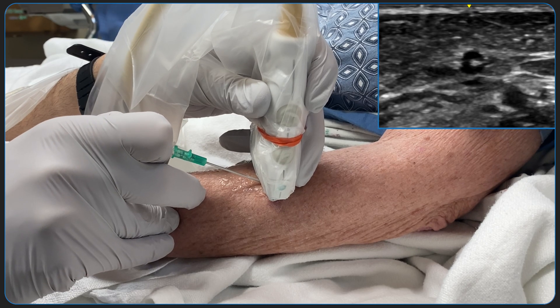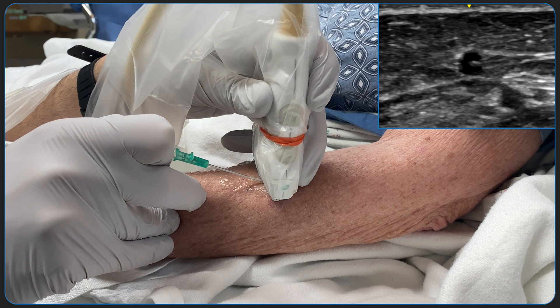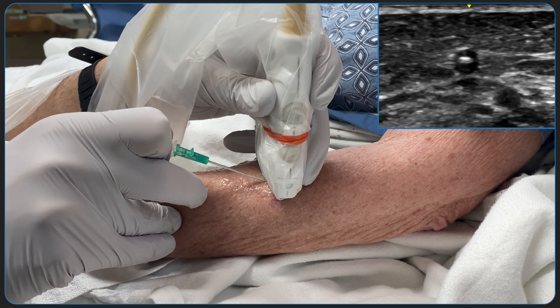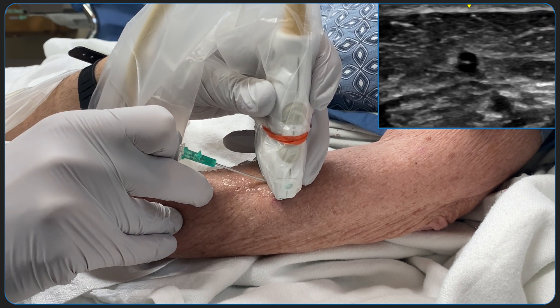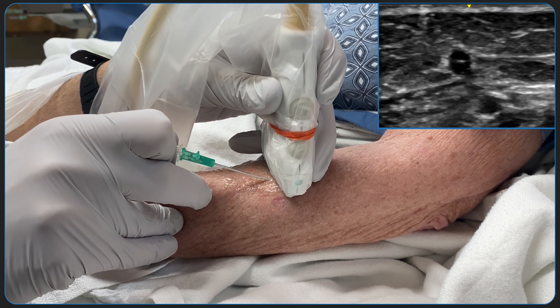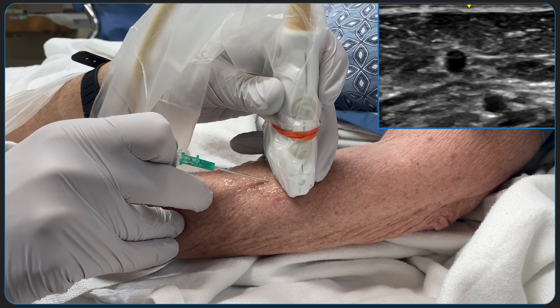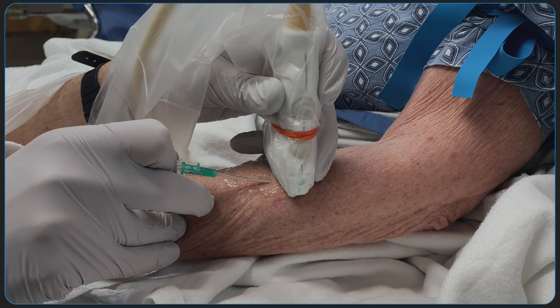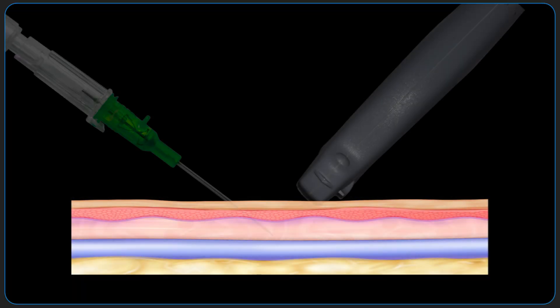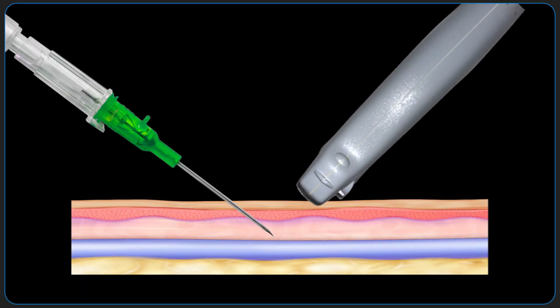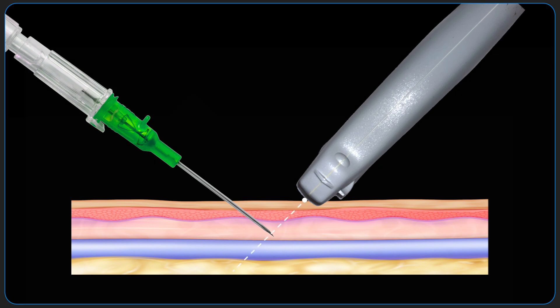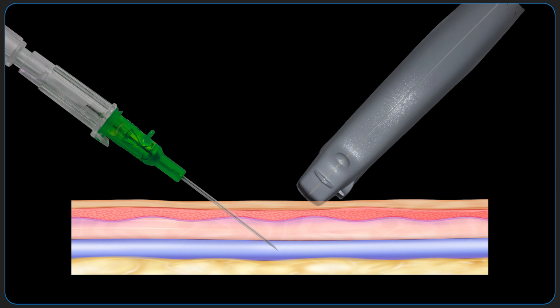The objective of ultrasound-guided IV placement is to use dynamic ultrasound visualization to insert a sufficient length of catheter into a peripheral vein before finally deploying the full length of the catheter into the vein. The primary mechanism of failure in this procedure is mislocating the tip of the needle on which the catheter is loaded. Therefore, it makes sense to focus on the dynamic location of the needle tip and ensure awareness of its location in three-dimensional space.